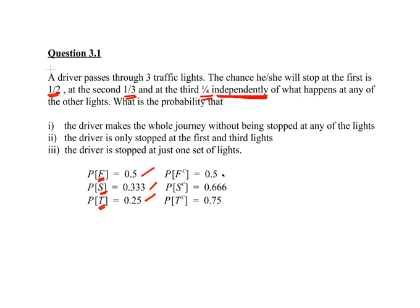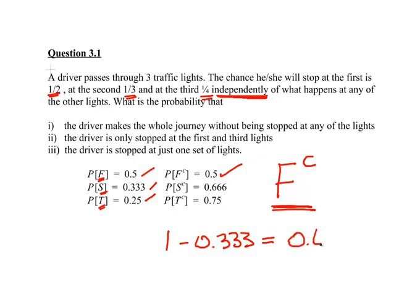Also, what we might be interested in is complement probabilities. For example, the probability of not getting stopped at the first is 0.5, and the probability of not getting stopped at the second — the complement event, there are a couple of different ways you might notate that — is 0.66, that is 1 minus 0.33. And the complement of T is 0.75, which is 1 minus 0.25.